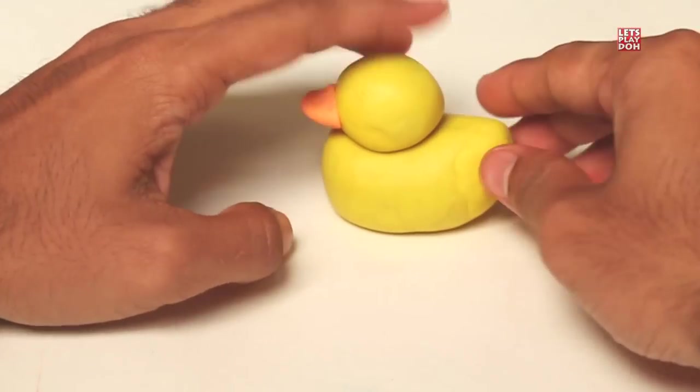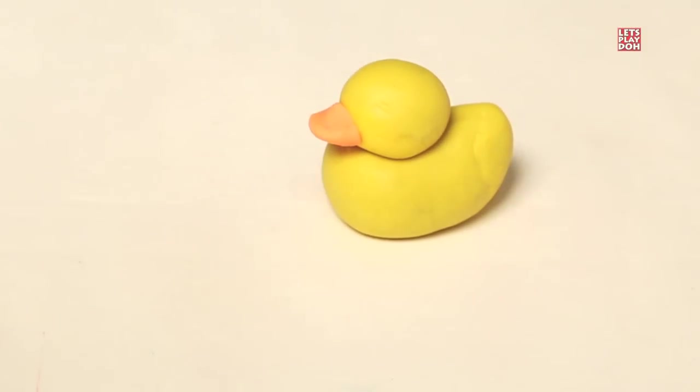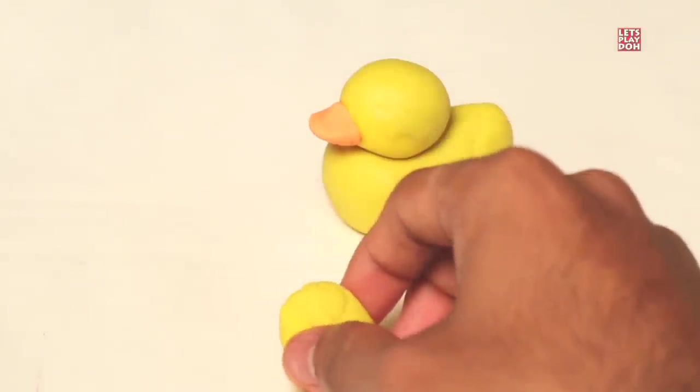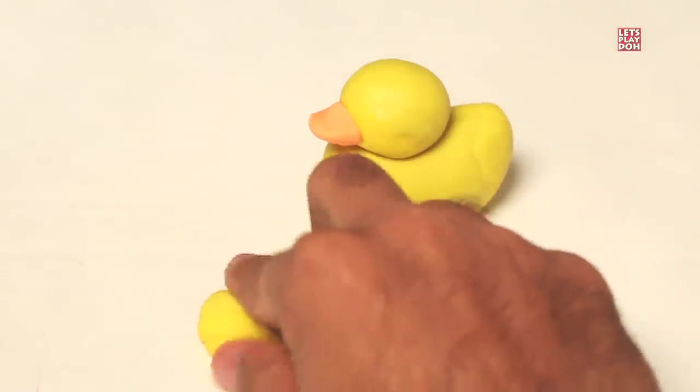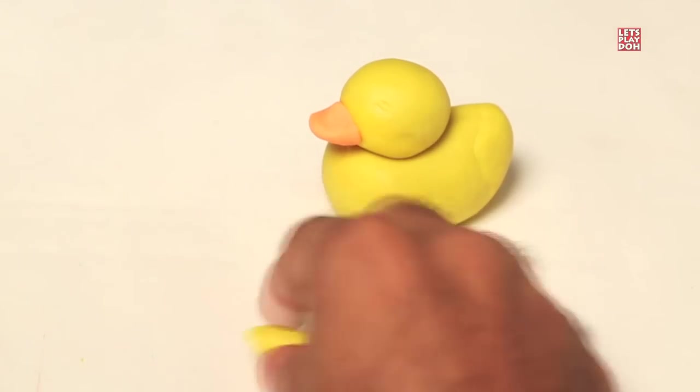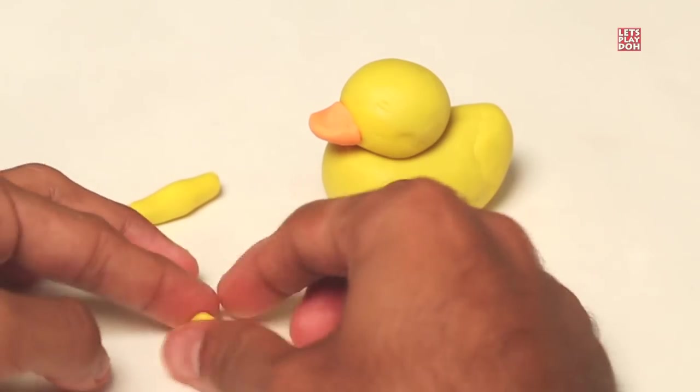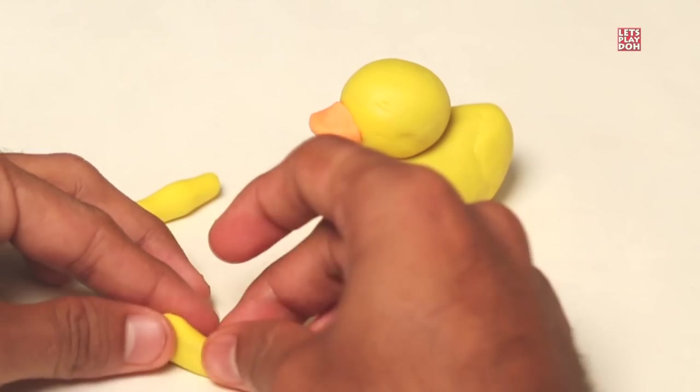Now we're going to make little wings for our ducky. Let's take some yellow play-doh. And not too much, just this amount here. So roll it between our hands and make a tube. Now we want to take our thumb and forefinger and press it. You see what I'm doing there?